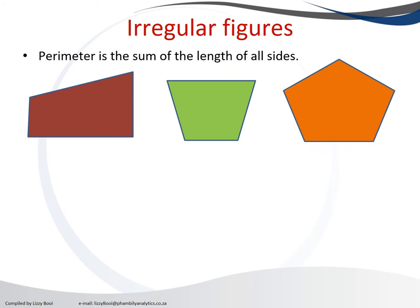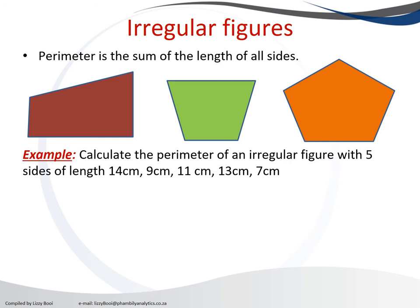They can look like this where it looks like a triangle or rectangle, but you can see that not all sides are equal. The green one also has unequal sides, or the orange one where it has five sides. Those we call irregular figures.